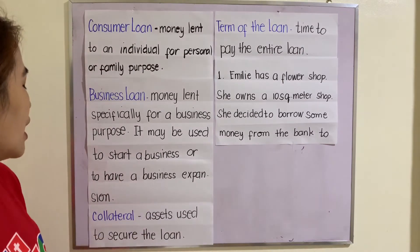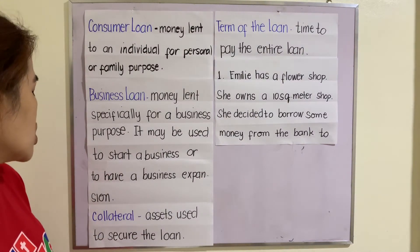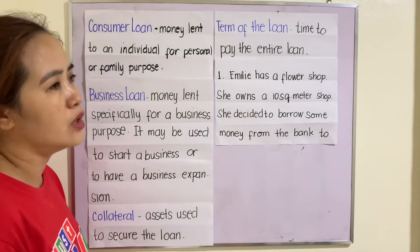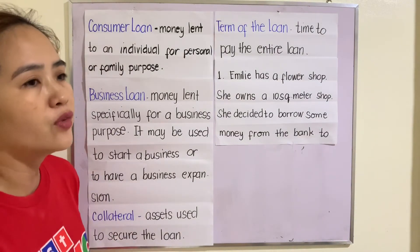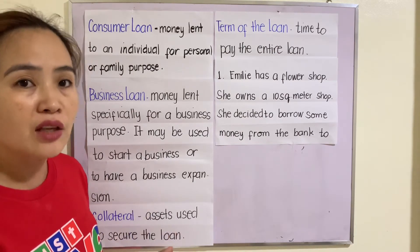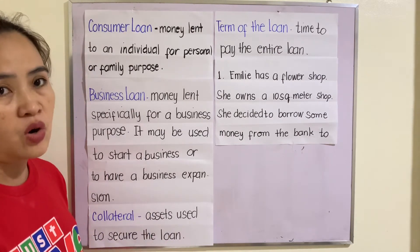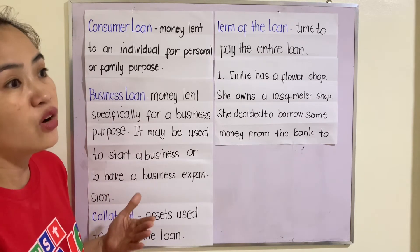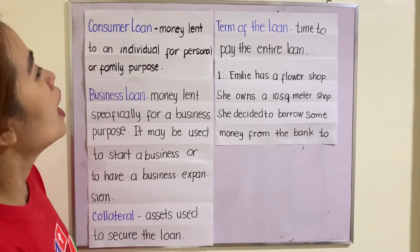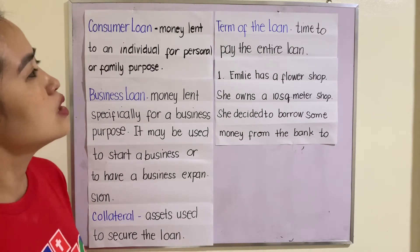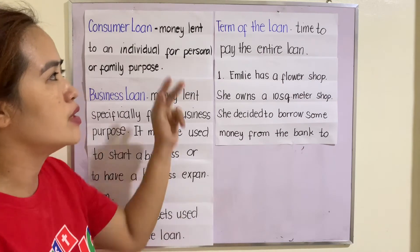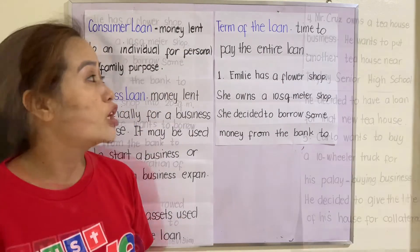Collateral: assets used to secure the loan. When we say collateral, you are going to give or deposit the title of your house or the title of your lot. Term of the loan: the time to pay the entire loan, referring to the number of years.